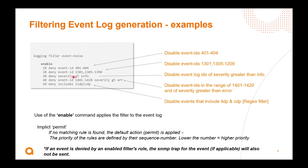The third rule — sequence 30 — I'm denying severity of any event greater than 'info'. Sequence 40, I'm denying events 1401 to 1428 with severity greater than 'error'. And the last one I'm denying would include anything with LLDP or CDP, using a regex filter for that. That's a slightly different syntax but it makes it flexible if you just want to eliminate all events concerning something like LLDP and CDP.